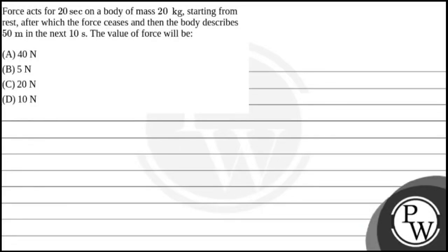Hello everyone, let's read this question. The question says: a force acts for 20 seconds on a body of mass 20 kg starting from rest, after which the force ceases and the body describes 50 meters in the next 10 seconds. The value of force will be — option A: 40 Newton, option B: 5 Newton, option C: 20 Newton, option D: 10 Newton.